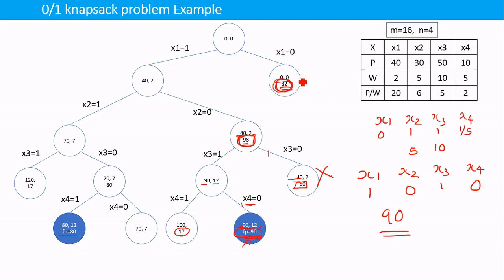This value is called the bounding value, computed using the bounding function. The bounding function helps us predict whether we will get a better profit by exploring a node further. If we are not going to beat the already-computed best profit, we do not explore that node. In the next lecture, the algorithm will be explained in detail.